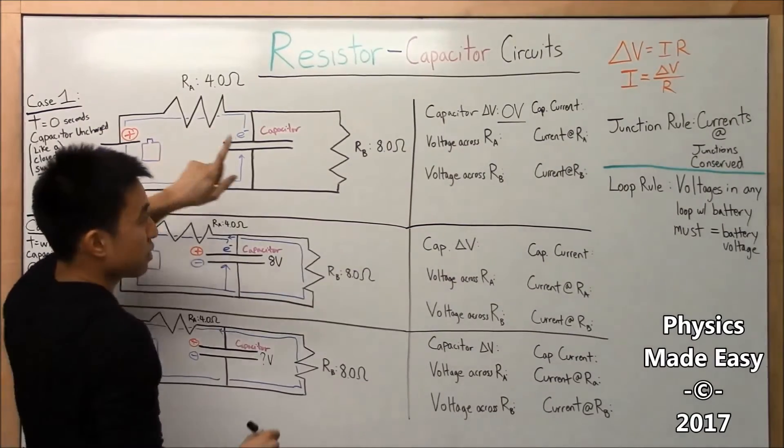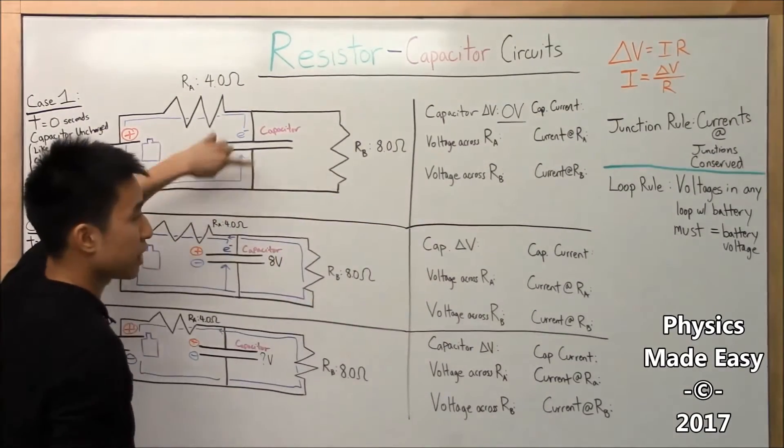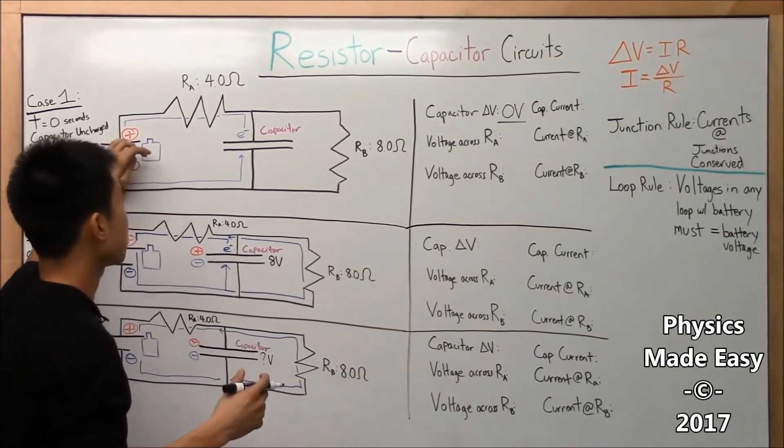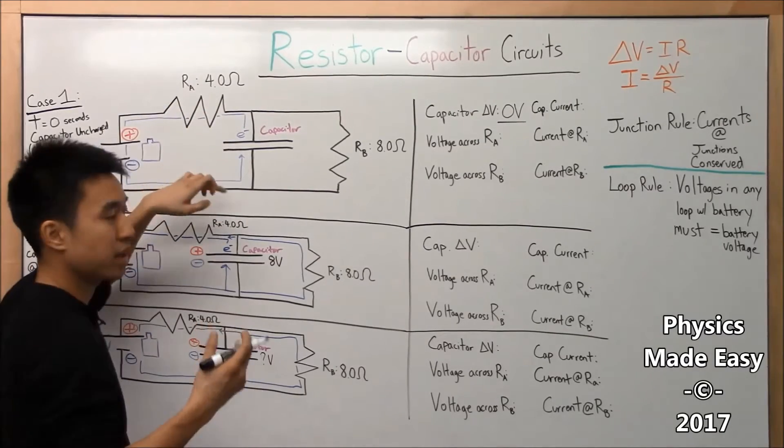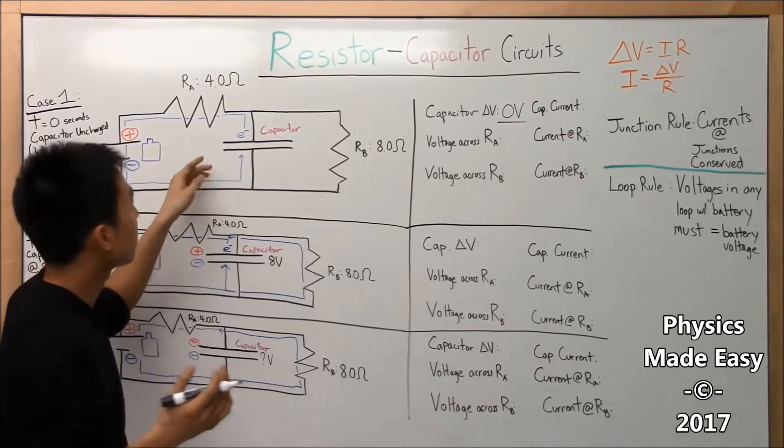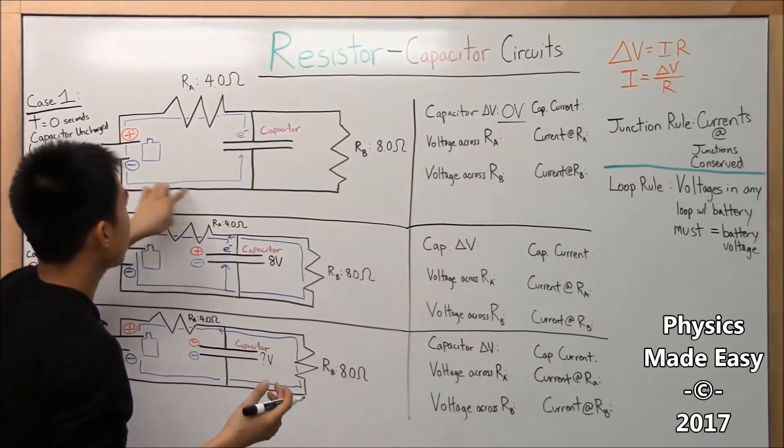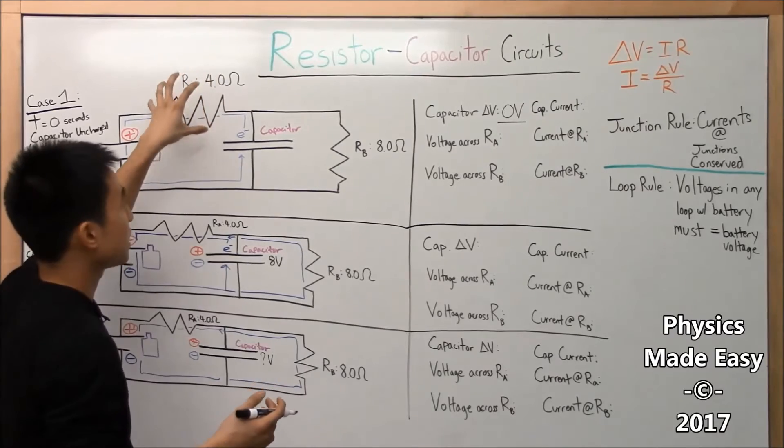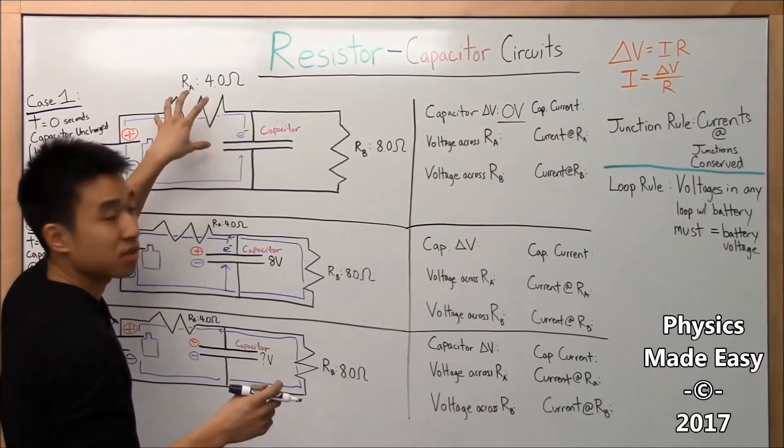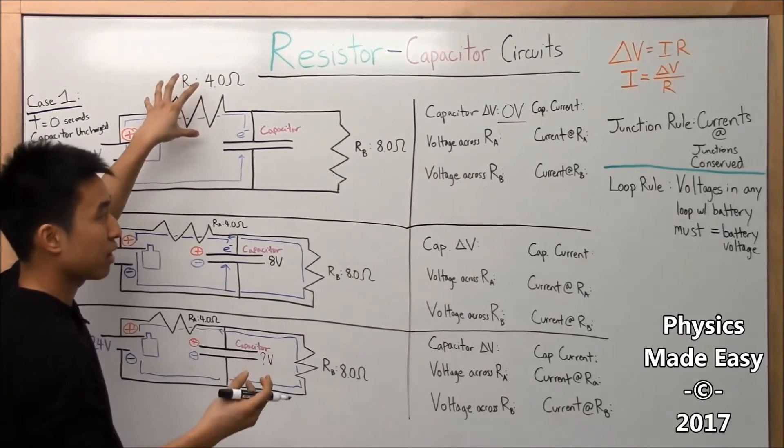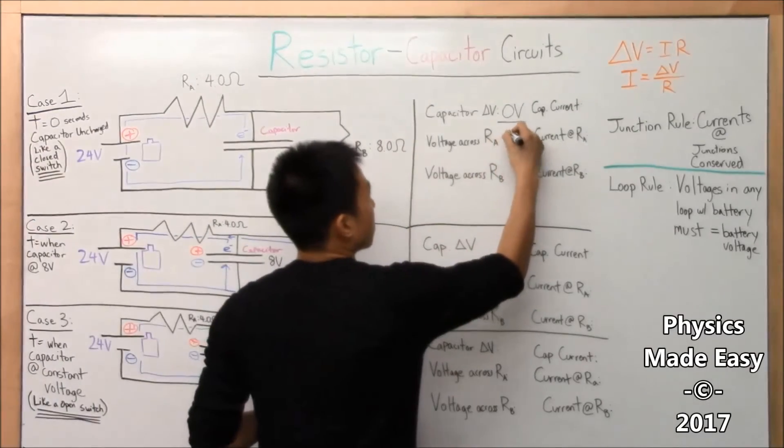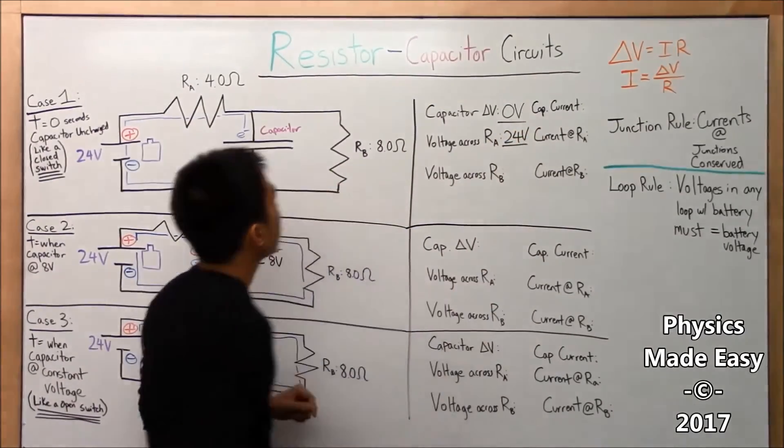And then the voltage across our resistor A, we use the loop rule, which is if you go through any complete loop, the sum of all the voltages must equal the battery voltage because the battery is what's causing it, it's what's creating the potential difference. So the capacitor has zero volts across it because it's not charged yet, and if you're back in the battery, so this resistor must be, you can think of it as like eating up voltage. So in this loop, this resistor must be, well it's the only thing that can eat up all 24 volts, so there's 24 volts across A.